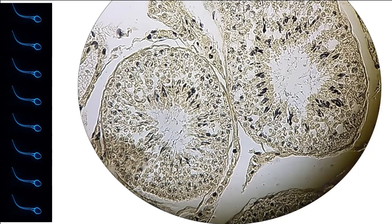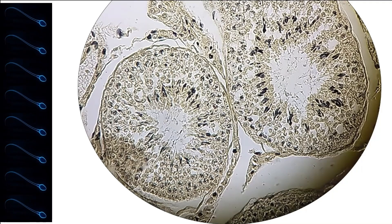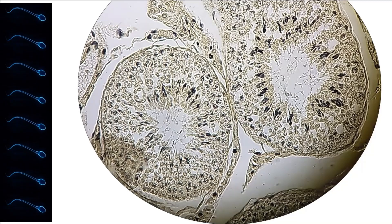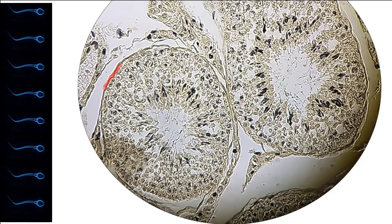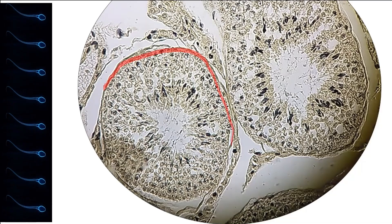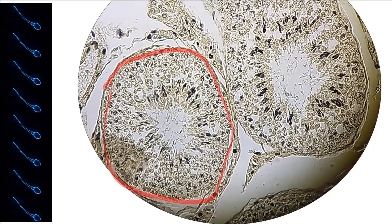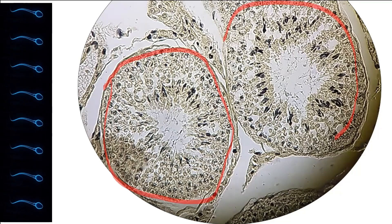This is how seminiferous tubules look like under the microscope. In this diagram, you can see there are two seminiferous tubules. This is the first one and this is the second one.